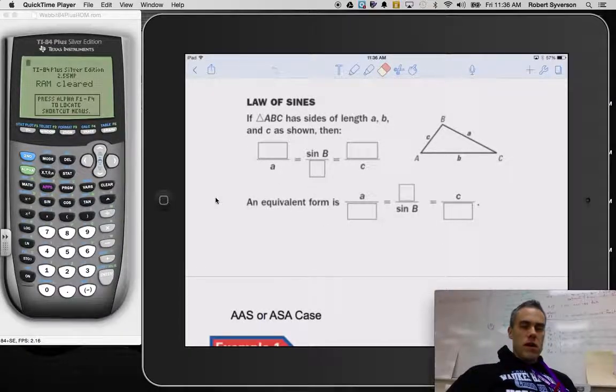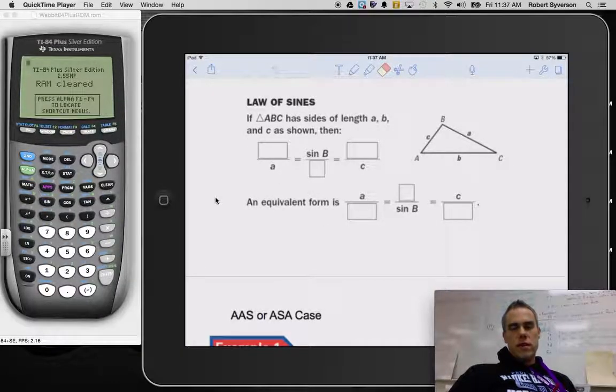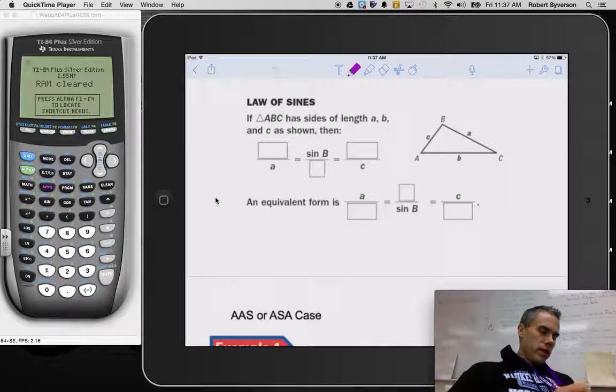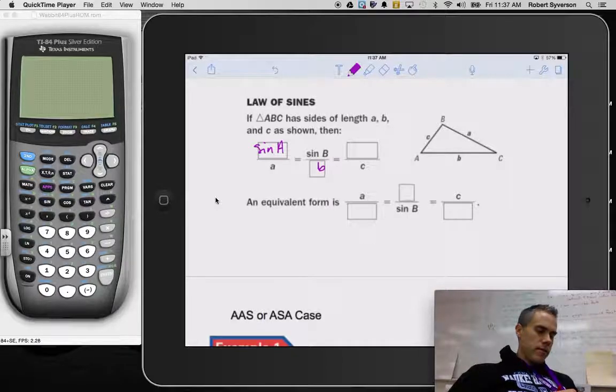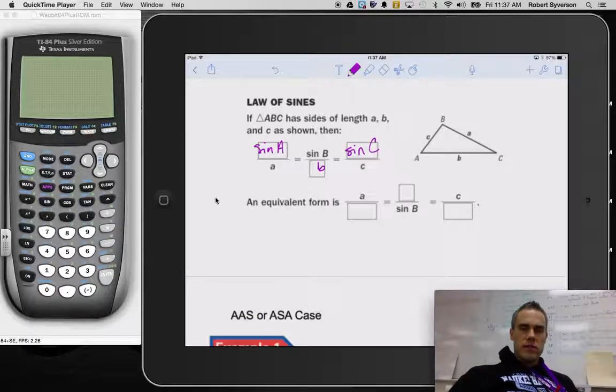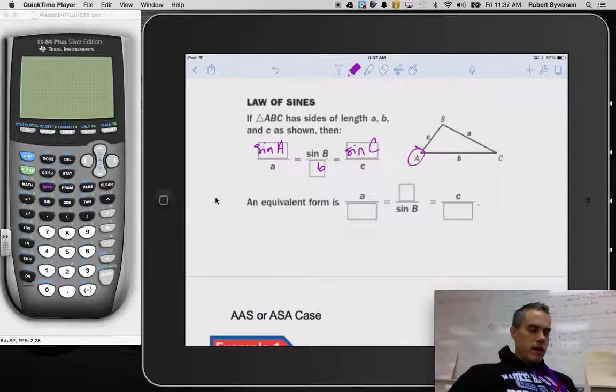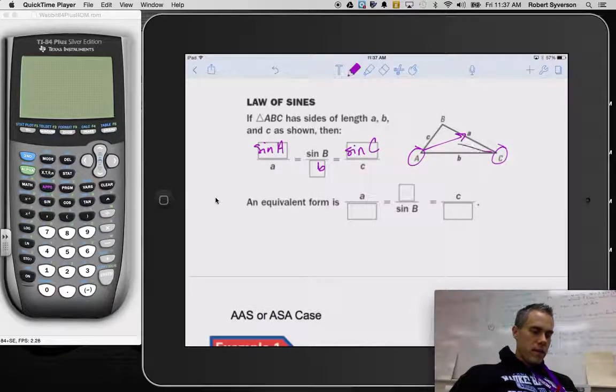The law of sines is three proportions that are equivalent to one another. We say that the sine of angle a divided by side a is equivalent to the sine of angle b over side b, which is equivalent to the sine of angle c over side c. So every one of these ratios is an angle side pair, as I refer to it. For instance, angle a is paired up with side a, and likewise, angle c is paired up with side c, and angle b is paired up with side b.